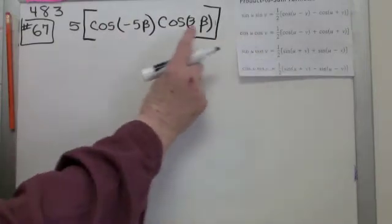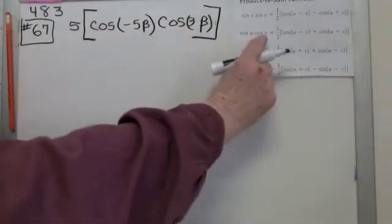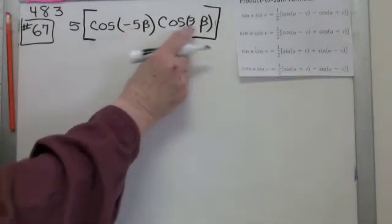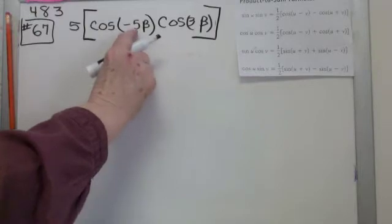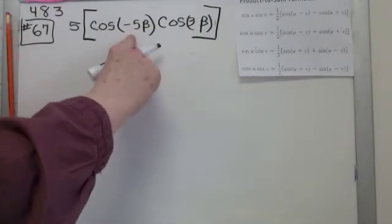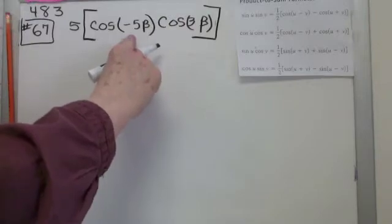So I start comparing, but then I notice another little difference. These two, the u and the v here, are both positive. But this one's a negative. So I need to do one little thing before we get started here. I have to use the even-odd identities.